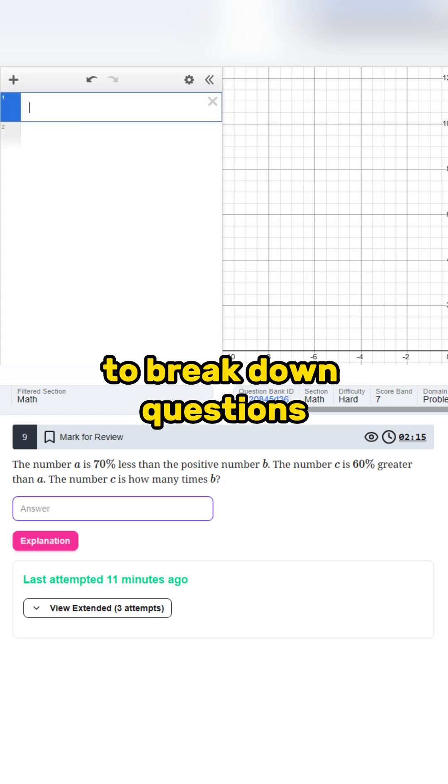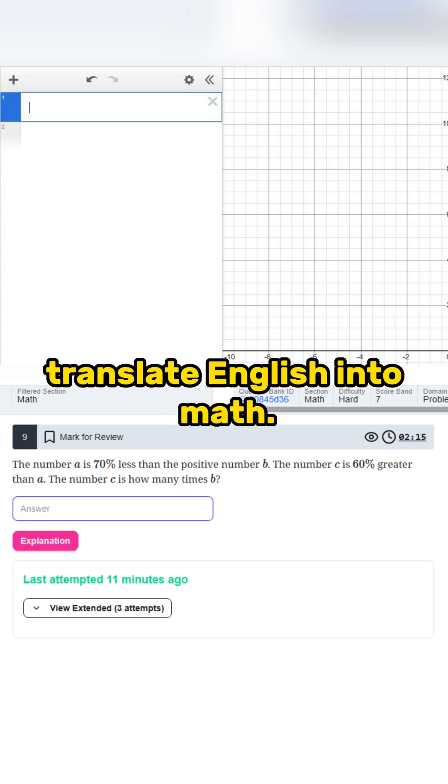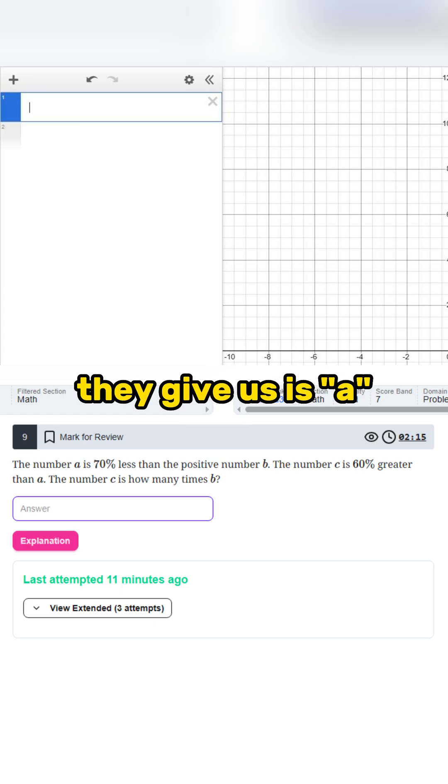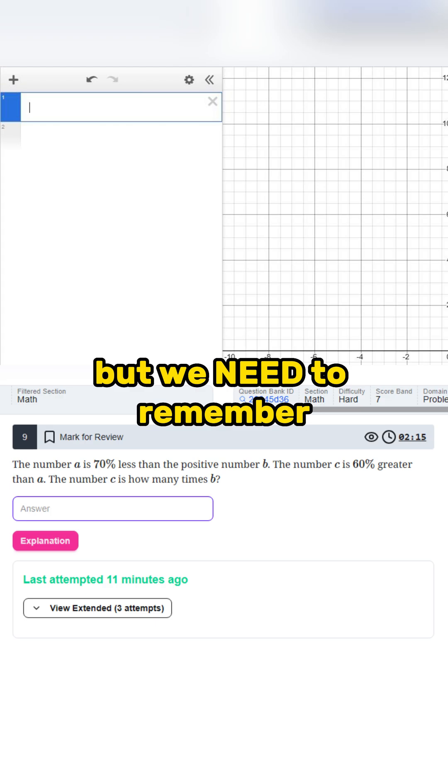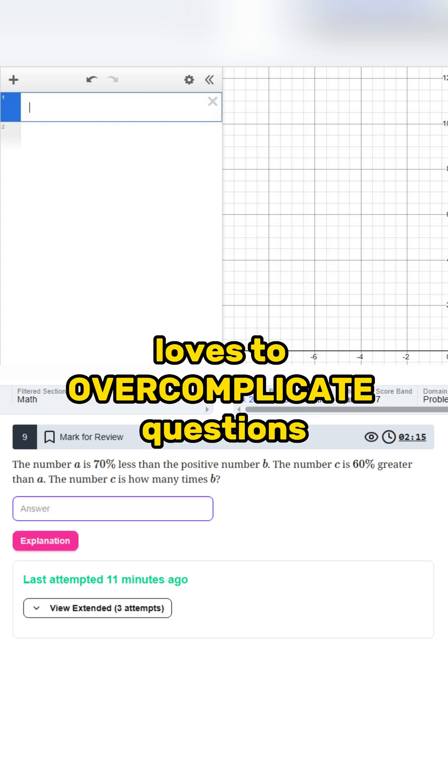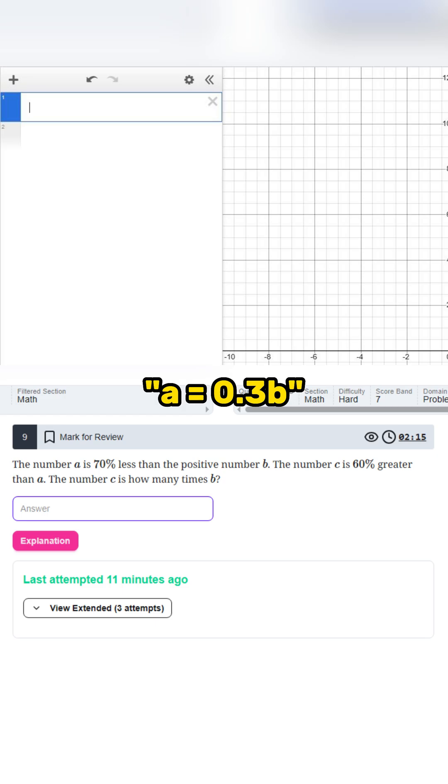First of all, the best method to break down questions like this is to translate English into math. For example, the first constant that they give us is A. They say A is 70% less than B, but we need to remember that the SAT loves to overcomplicate questions, so we can just change their statement into A equals 0.3B.